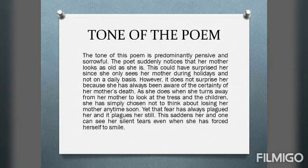Let us discuss the tone of the poem. The tone is predominantly pensive — full of sorrow or pain. The poet suddenly notices her mother looks as old as she is, which could have surprised her since she only sees her mother during holidays. However, she has always been aware of the certainty of her mother's death, and when she turns away to look at trees and children, she has simply chosen not to think about losing her mother. Yet that fear has always plagued her and it plagues her still, saddening her — one can see her silent tears even as she forces herself to smile.